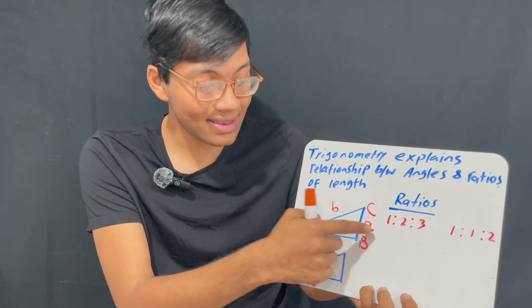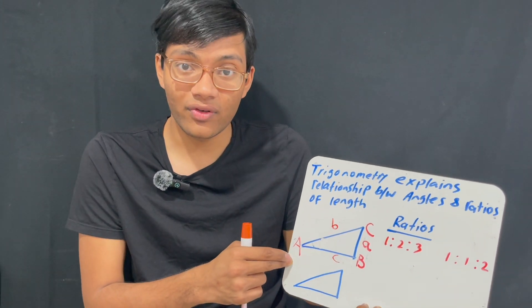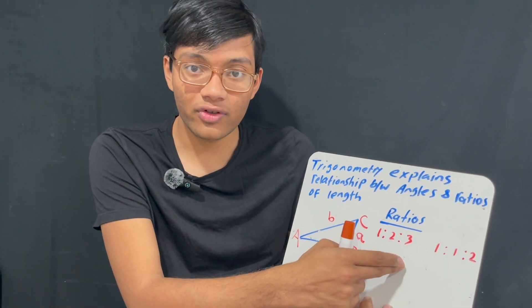Okay, so the angles are uppercase, the sides are lowercase. So now that we've discussed the naming convention for triangles, let's talk about the two most famous ratios for triangles.